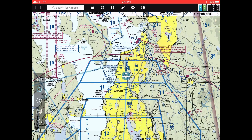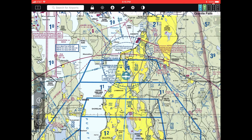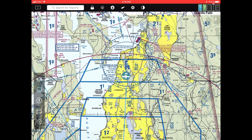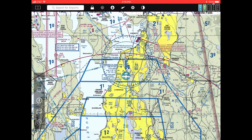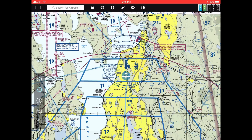Augmented reality is the merging of computer-generated images — like airports — that are overlaid upon real-time images taken from your iPhone's camera. In other words, a live video feed has stuff put on top of it.